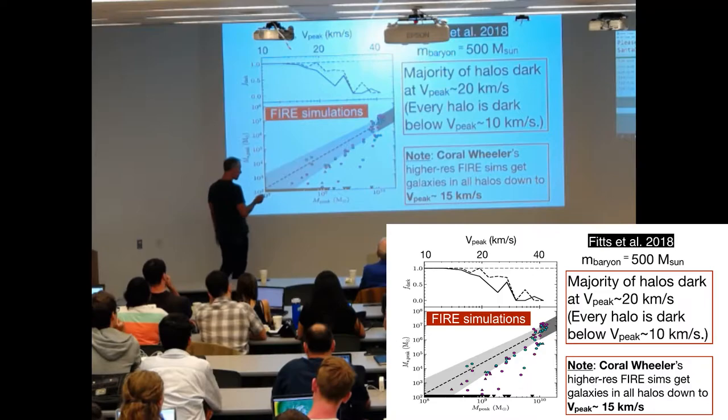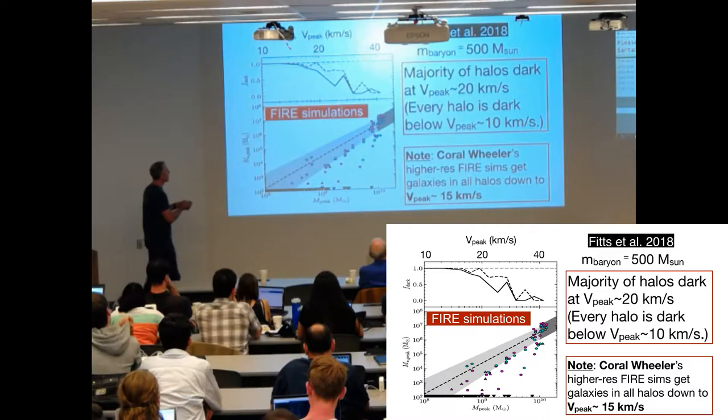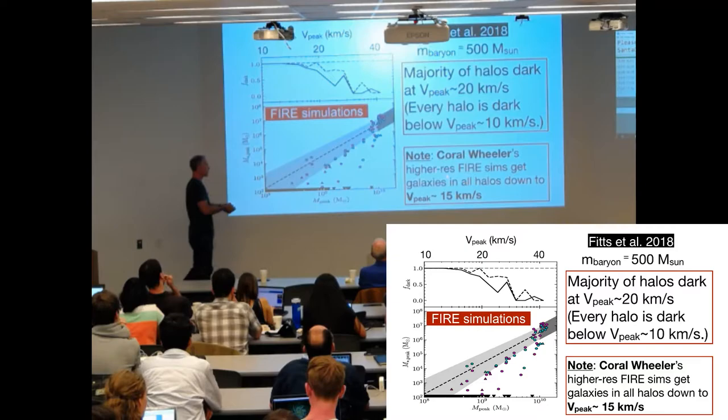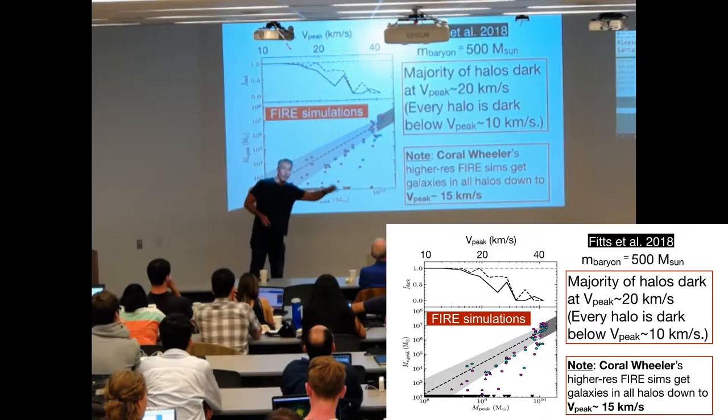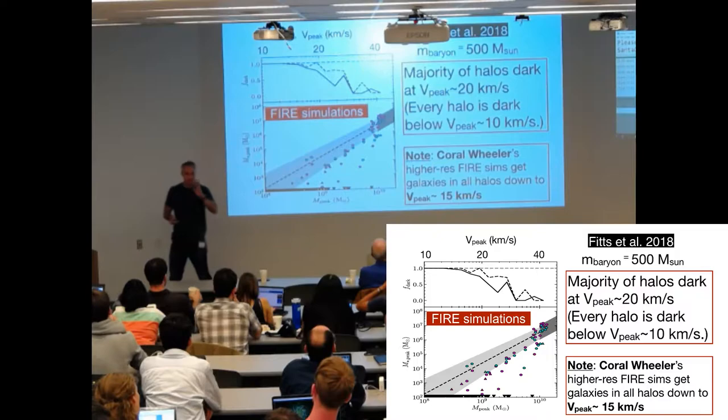Here's another. This is from the FIRE group. This is Fitz et al., plotted here as V peak. And then now we're plotting the fraction that's dark instead of the fraction that's light. But again, things start getting dark around 20 kilometers per second. Note that Coral has run, so these are 500 solar mass baryon simulations. Coral has run much higher resolution simulations. She's finding well-resolved galaxies now down to V peak of 15 and even lower. So I think that's going to be interesting and I'll return to that idea later. But, I'm just going to use this as a conventional wisdom. Galaxies start going dark around 20 kilometers per second.